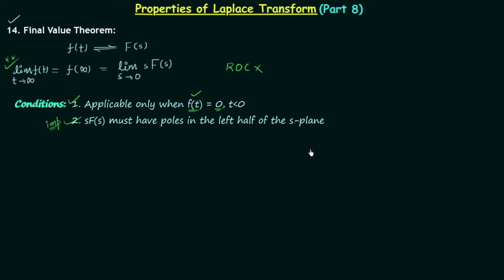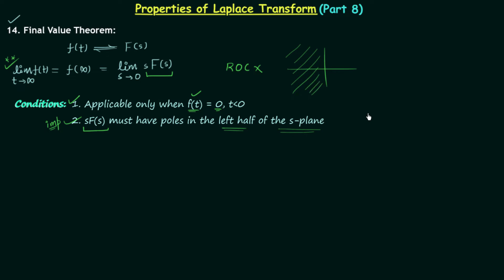Now we will move to the second condition, which is an important condition — every time you use the final value theorem, you must check this condition first. According to this condition, s·F(s) must have all its poles in the left half of the S-plane. So if this is the S-plane, all the poles of s·F(s) must lie in its left half. Whenever you are about to use the final value theorem, check condition two, and if the ROC is given, also check condition one.